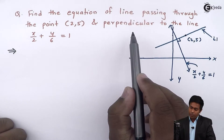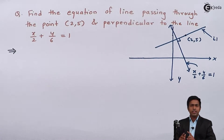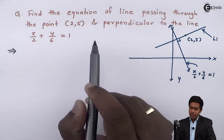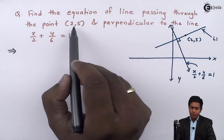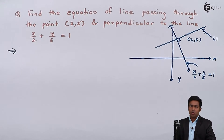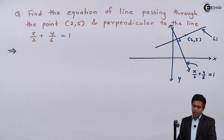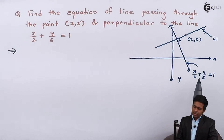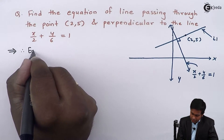Let's start with the solution. Our required line is perpendicular to x/2 + y/6 = 1, and we know that when two lines are perpendicular to each other, the multiplication of their slopes equals -1. Using that property we can get the slope of the required line, and since a point is given, we can use the slope-point form to find the equation of the line.